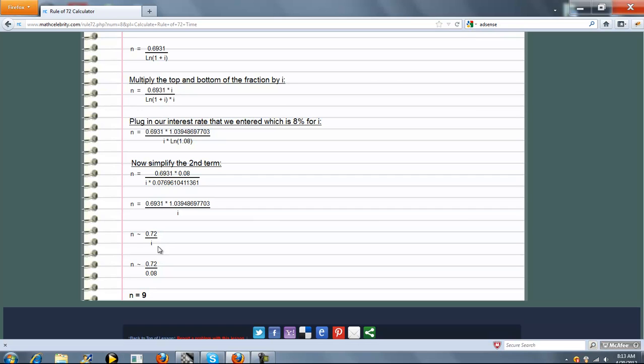After we get our approximation, you just plug in your interest rate for i, and we get 9. So it takes 9 periods of time to double your money at 8%.